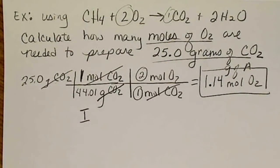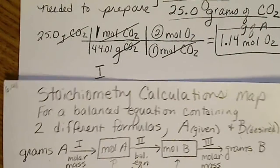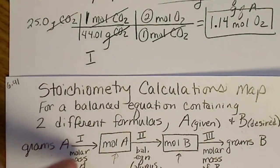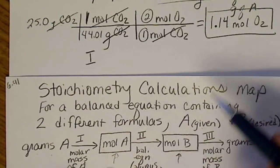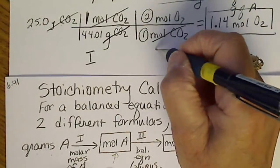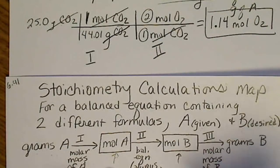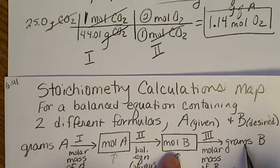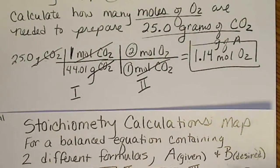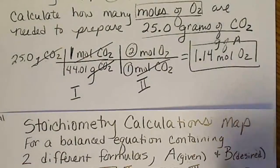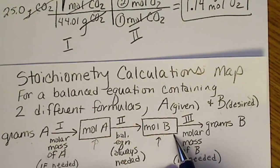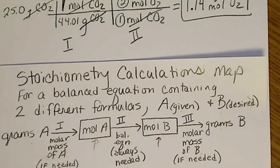And again, looking at this along with our stoichiometry map, we started with grams of CO2 because that was given. And we did the molar mass step. And then the only way we can convert from one formula to the other is with step two. And that's the balanced equation step. Here, we did not have to convert to grams of oxygen because the question asked for moles. So since we were asked for moles, step three was not necessary. We only convert from moles to grams if the question asks us to do so.